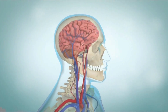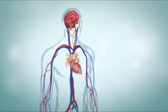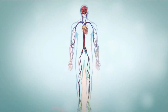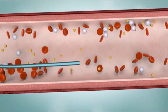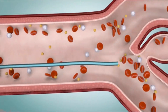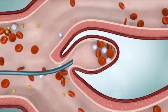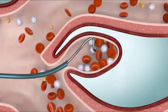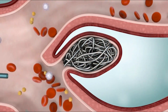If your aneurysm is hard to reach, an endovascular procedure called coiling may be used. The surgeon makes a small cut in your arm, neck, or leg. A thin, hollow tube called a catheter is put into an artery and guided to the aneurysm with the help of an x-ray. The surgeon then moves a wire with small metal coils through the catheter and into the aneurysm. The coils are left in place, blocking blood flow to the aneurysm.